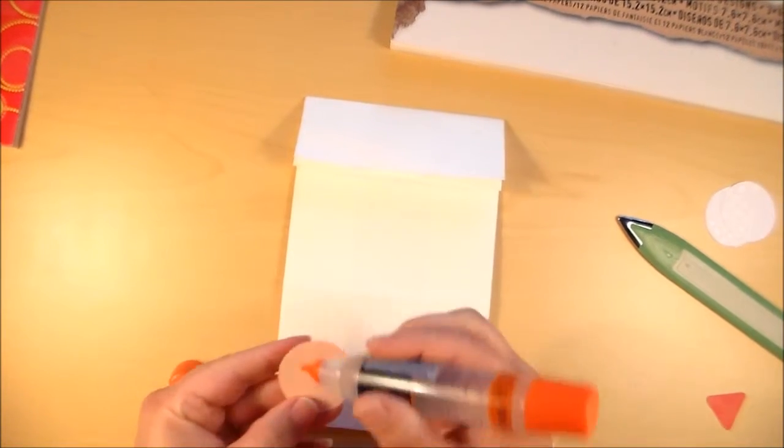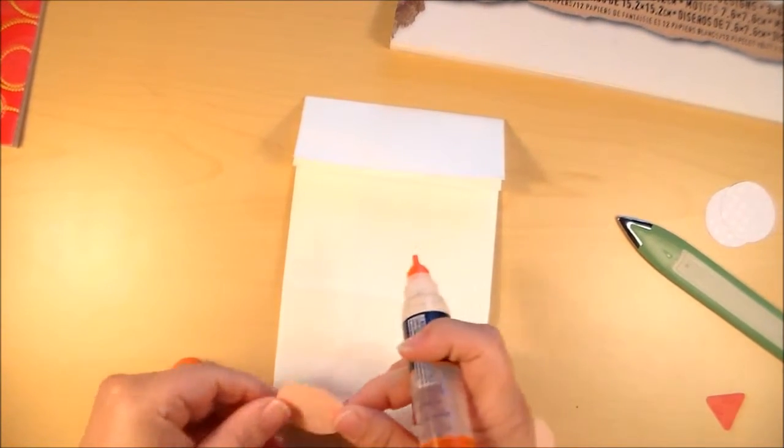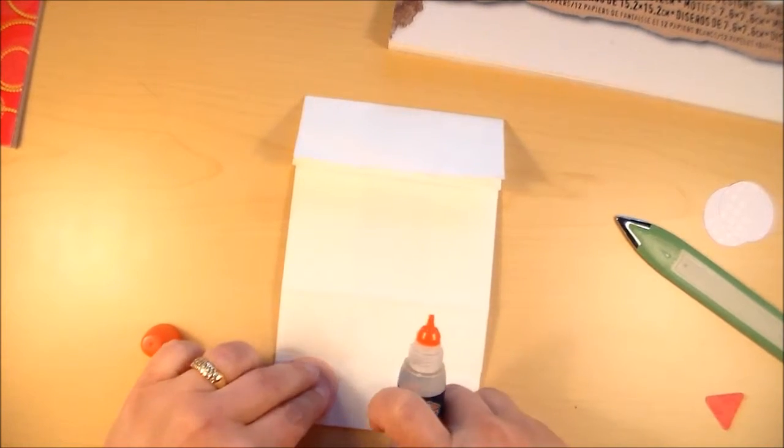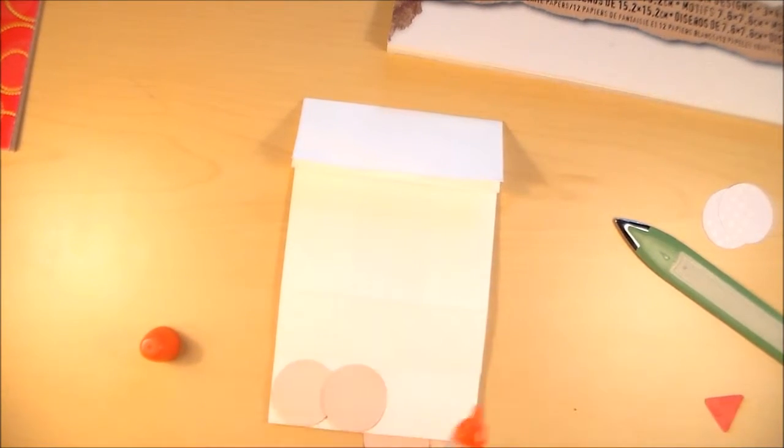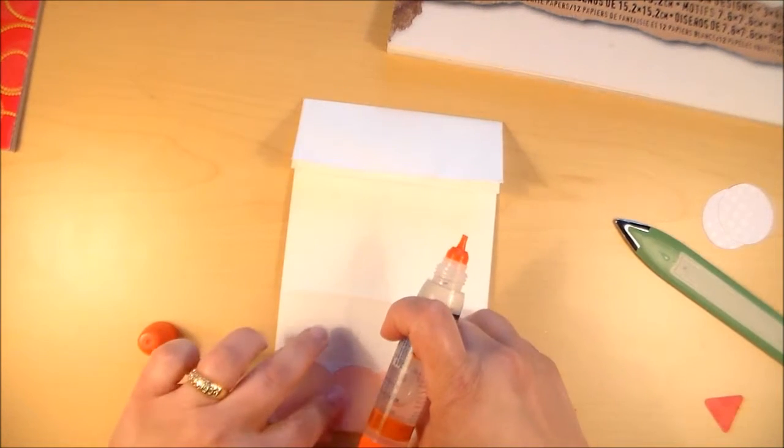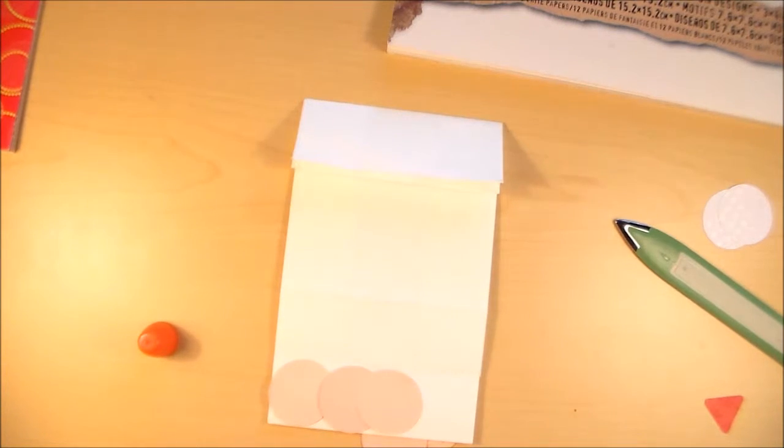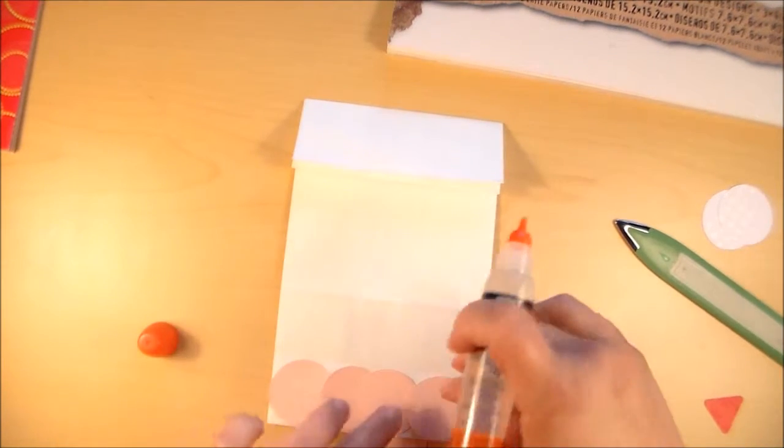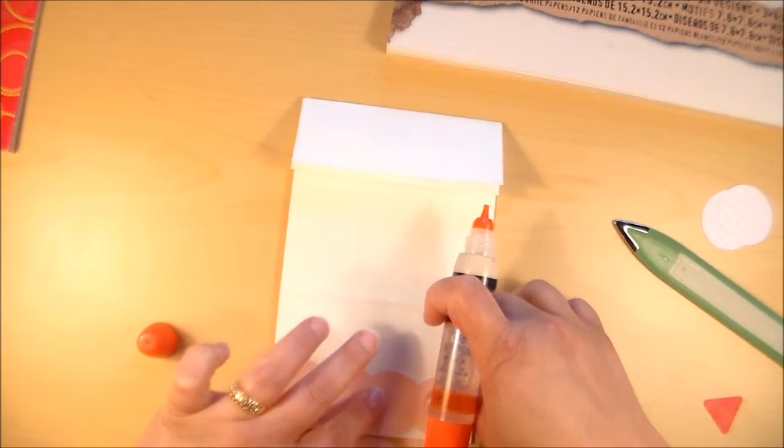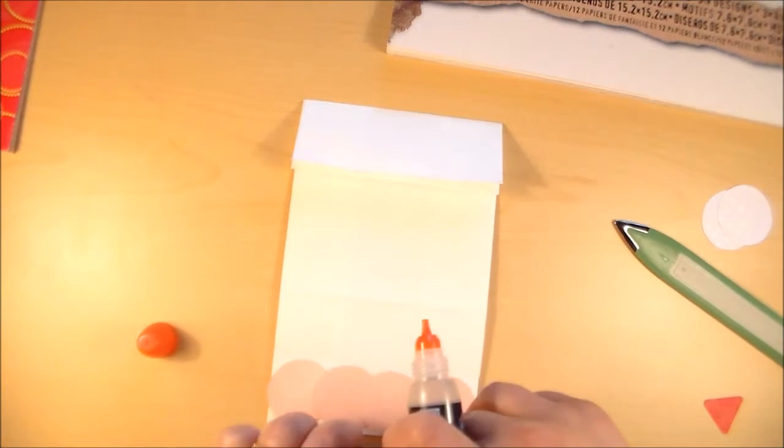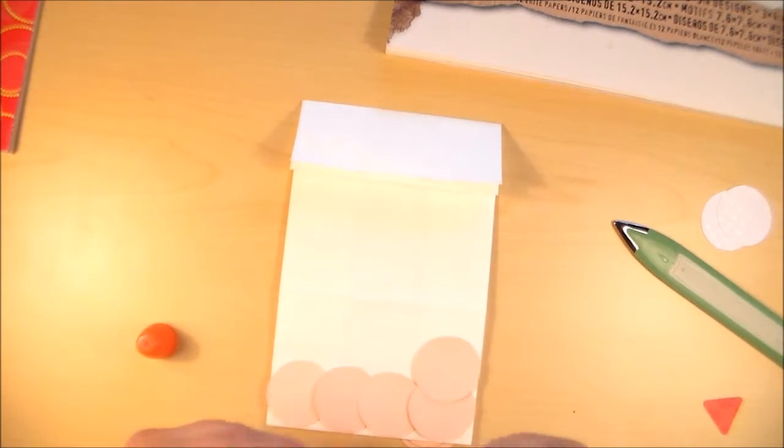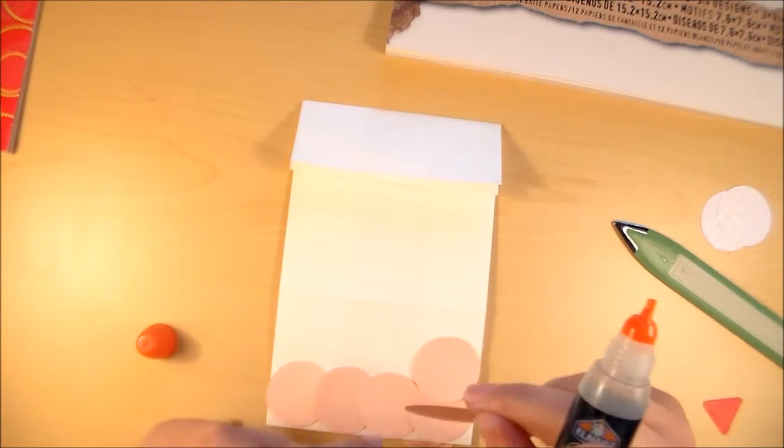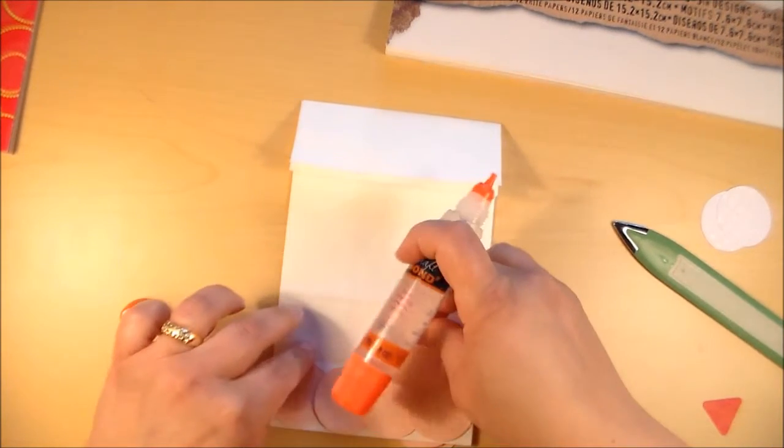So I'm just going to take some craft glue and just run a bead. It doesn't have to be super exact. And you start at the bottom and work your way up. I like to go from the lightest color at the bottom to the darkest color at the top and do a gradient effect.